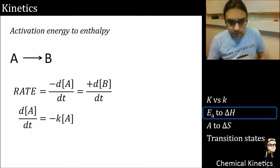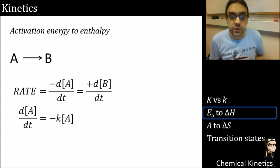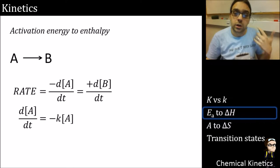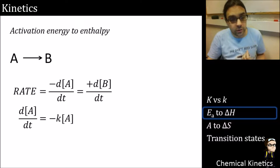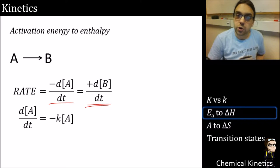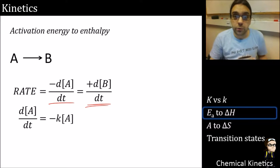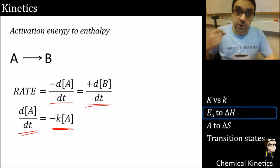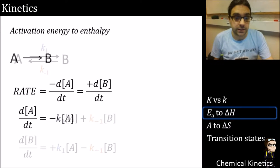Let's start with the very basics: an irreversible reaction. The rate is equal to the rate of change of the reactants and products, controlled by d[A]/dt equals negative k[A]. That's our starting point for any kind of kinetics.